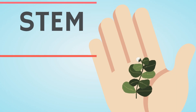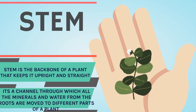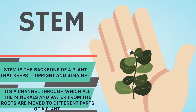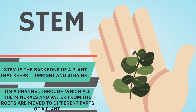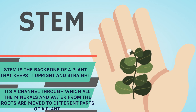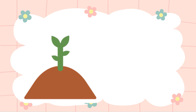This is a stem. It is a backbone to the plant. It provides support and keeps it upright and straight. It also acts as a channel through which all the minerals and water collected by the roots are moved upwards to the different parts of the plant body.